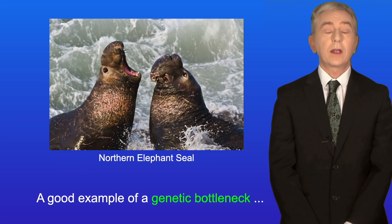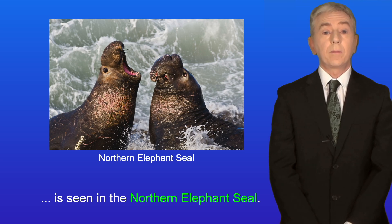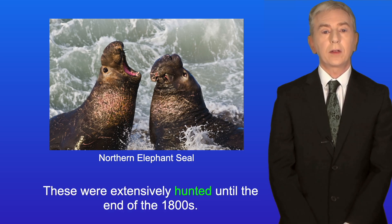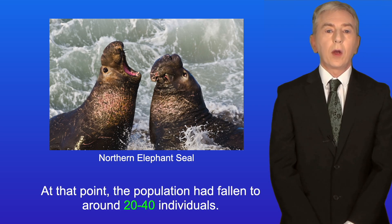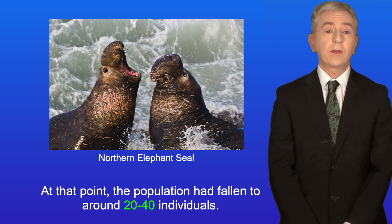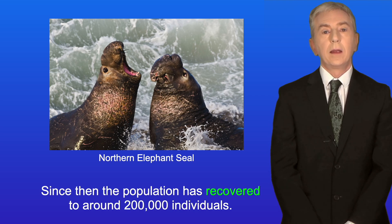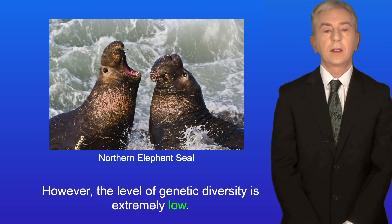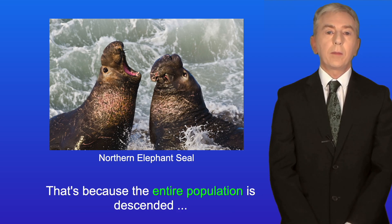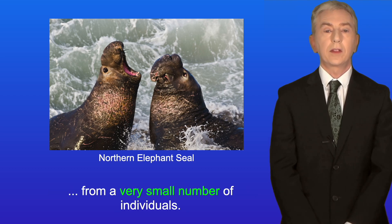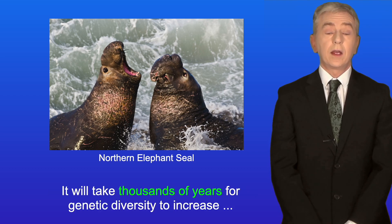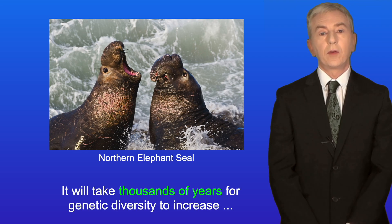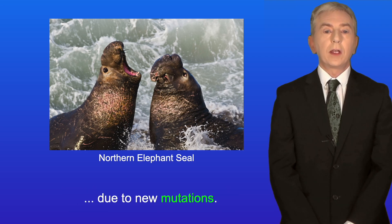A good example of a genetic bottleneck is the northern elephant seal, which was extensively hunted until the end of the 1800s, at which point the population had fallen to around 20 to 40 individuals. Since then, the population has recovered to around 200,000 individuals. However, the level of genetic diversity is extremely low because the entire population is descended from a very small number of individuals, and it will take thousands of years for genetic diversity to increase due to new mutations.